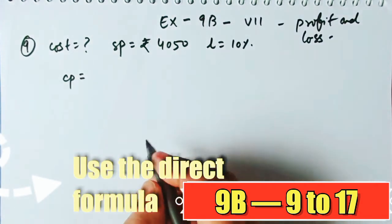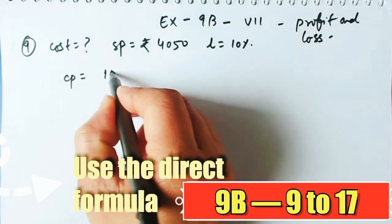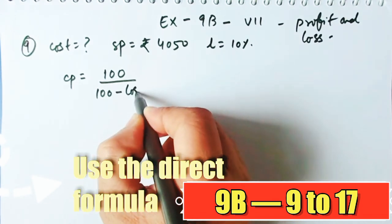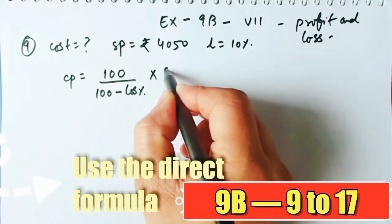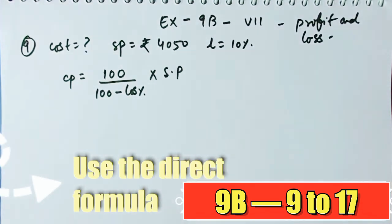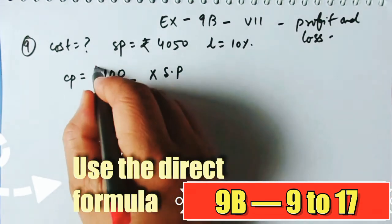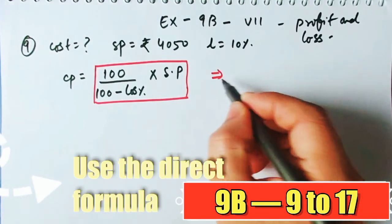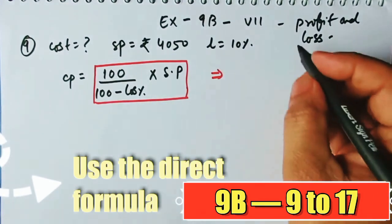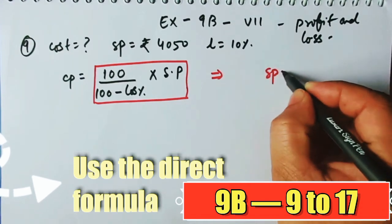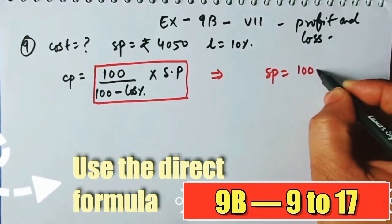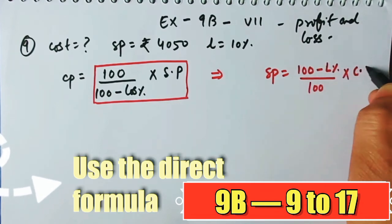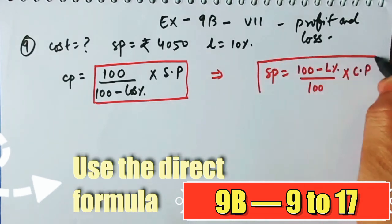The direct formula for cost price is: CP = 100/(100 - loss%) × SP. This comes from the formula you learned previously: SP = (100 - loss%)/100 × CP.